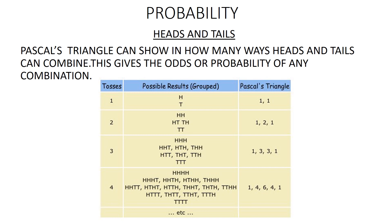Next is probability. Pascal's Triangle represents the ways in which heads and tails combine when coins are tossed, thus giving the odds of any combination. For example, consider the experiment of counting the number of heads obtained as the outcome. When a coin is tossed, there are two outcomes, either a head or a tail. This is represented by the entries of the 1st row, which add up to 2, giving 1/2 as the probability for no head and 1/2 as the probability for 1 head.